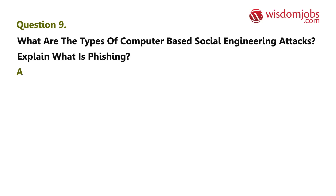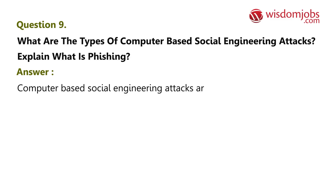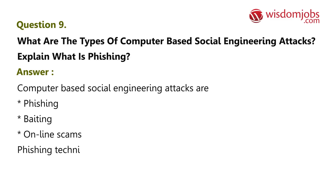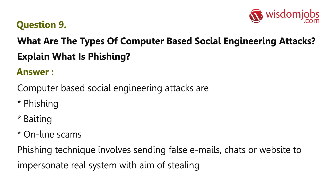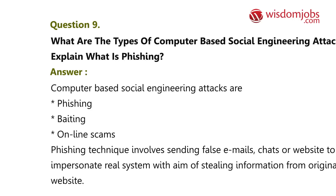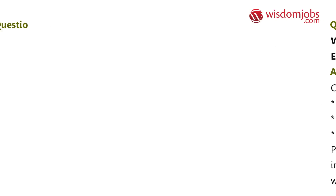Question 9: What are the types of computer-based social engineering attacks? Explain what is phishing. Answer: Computer-based social engineering attacks include phishing, baiting, and online scams. Phishing involves sending false emails, chats, or websites to impersonate real systems with the aim of stealing information from the original website.